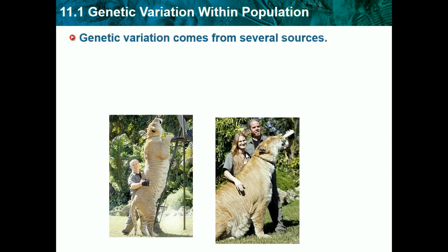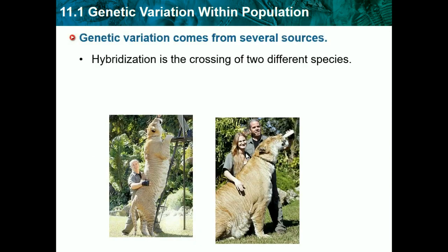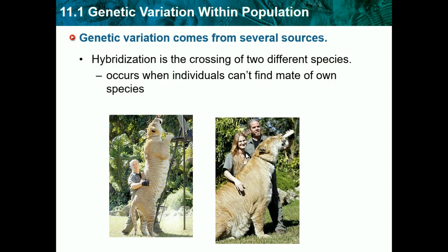Genetic variation comes from several sources. Hybridization is the crossing of two different species and occurs when individuals can't find a mate of their own species. When an animal can't find anything to mate with of its own species, it sometimes mates with an animal of a closely related species — sometimes it works out, sometimes it doesn't.